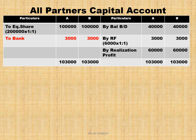Since profit sharing ratio is not given in the question, we take it as equal. Reserve fund is distributed to both partners equally — 3,000 each. Realization profit of 1,20,000 is distributed equally: A gets 60,000, B gets 60,000. Final capital balance: capital plus RF plus realization profit = 1,03,000 each for A and B. Since both partners' final capital balances are equal at 1,03,000, equity shares are distributed equally in ratio one is to one.